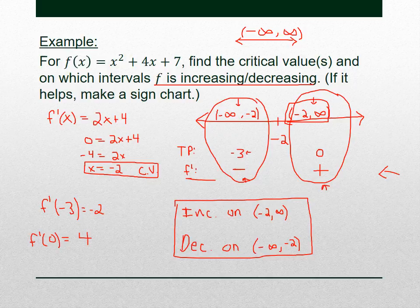To summarize the process: find the critical values, break your number line into pieces — here with one critical value we got two pieces — identify your intervals, choose one test point from each interval and plug it into the first derivative to check the sign. Negative means decreasing on that interval; positive means increasing. That's how we determine where a function is increasing or decreasing.